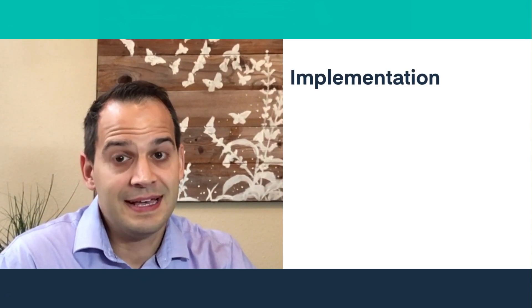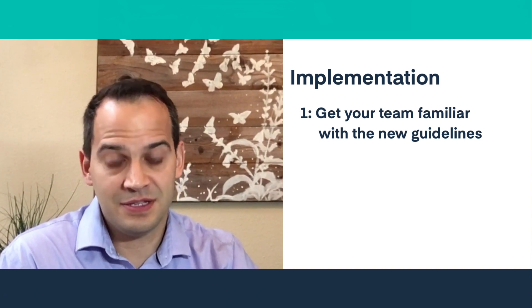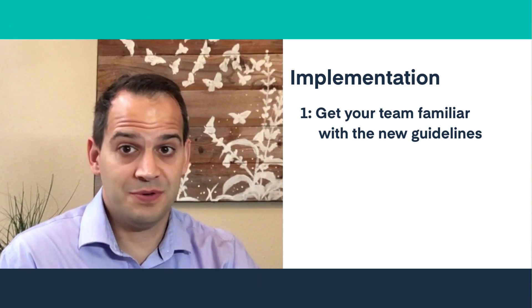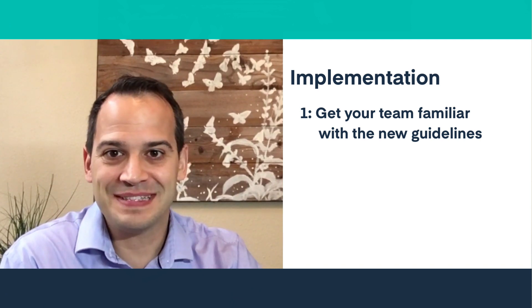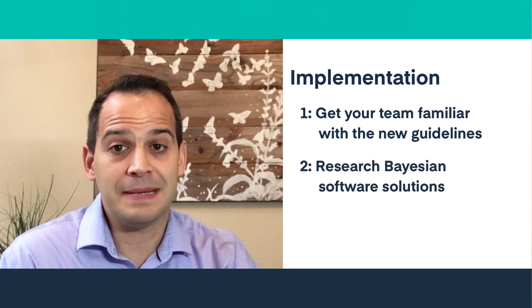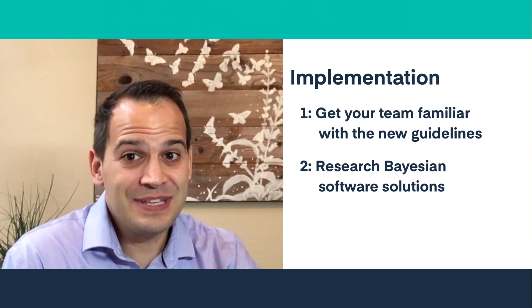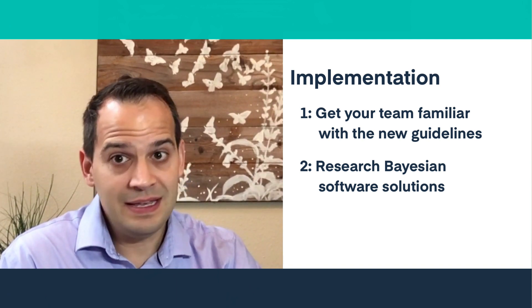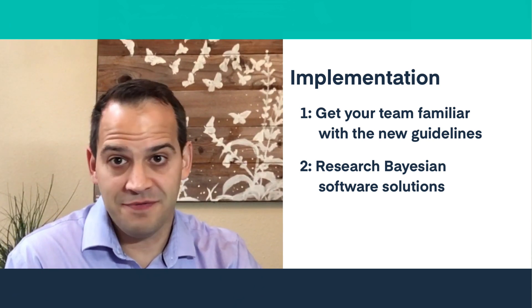If your hospital or pharmacy department is ready to adapt to the new guidelines, here's how we recommend going about that process. Step one: get your pharmacy colleagues or your team familiar with the new guidelines. You can share this video with them to start, and also send them our 2020 vancomycin dosing guidelines white paper — the link is in the description box. Step two: research the Bayesian dosing software solutions. It makes sense to look into the guideline-preferred choice, though every health system is unique and it's about finding a solution that gives you the most value for your pharmacy department's budget.